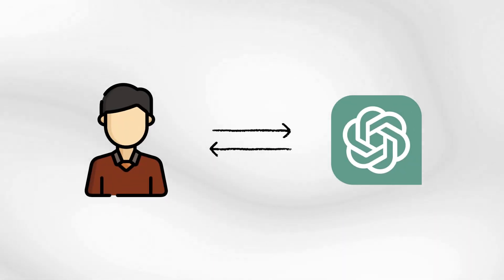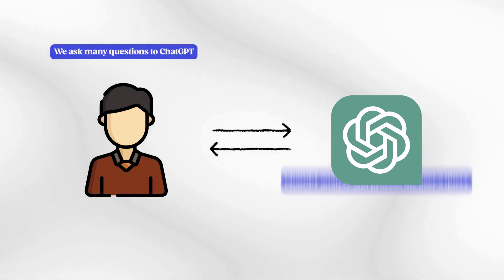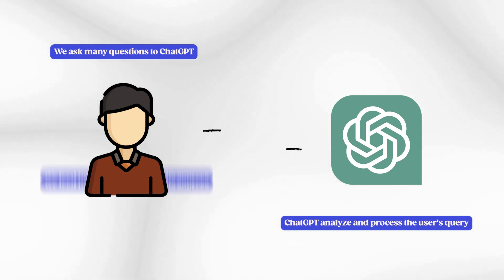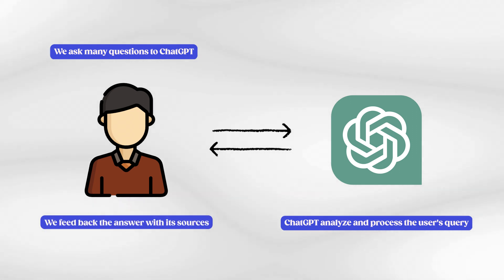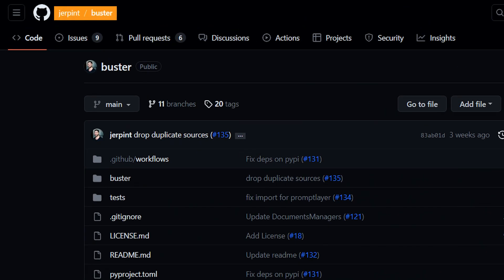All the links are below. It's a complex chain of prompts where we ask many questions to ChatGPT and have it analyze and process the user's query until we feed back the answer with its sources. For the most technical of you, here's a quick coverage of what we did. It all started on Buster, an open source framework developed and maintained by a friend of mine, which you can implement for your own knowledge base as well. We start by ingesting all our data into memory, done by processing all the content we have — split into chunks of text — to OpenAI's text embedding ADA encoder model.